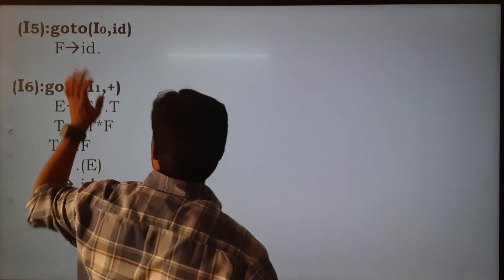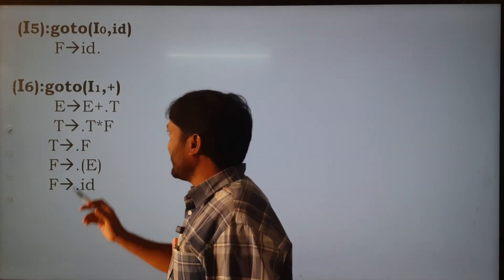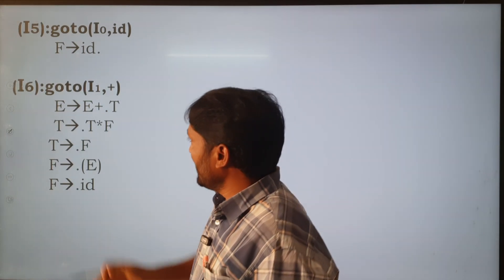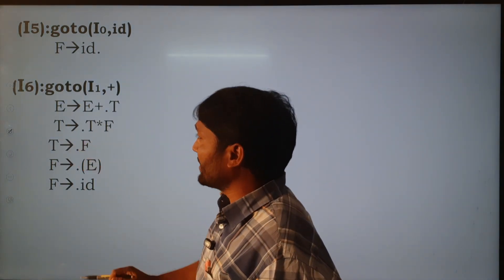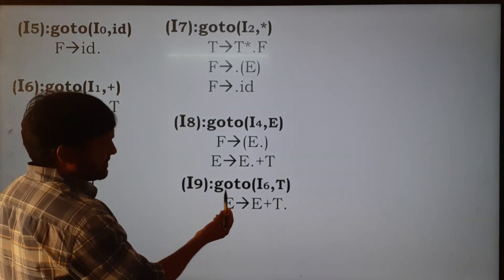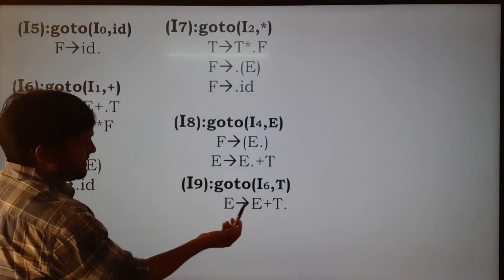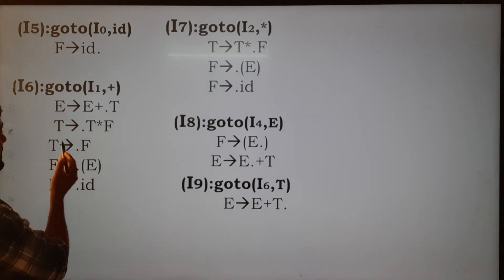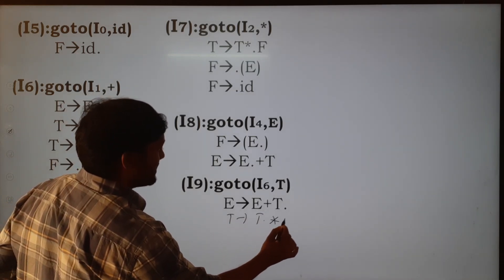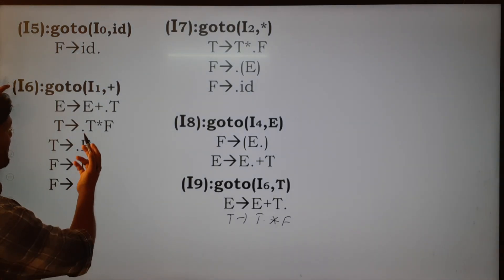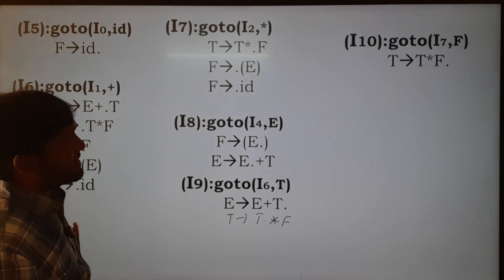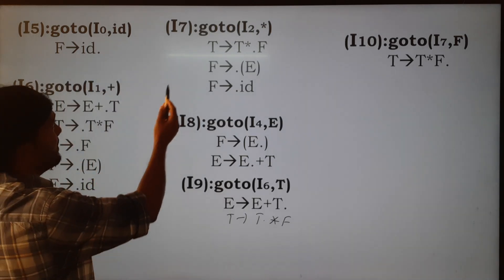In I6 there is capital T after the dot. We apply the goto function for capital T. Applying goto(I6, T): E → E+T. and there is one more production T → T.*F. This is I9. F is already over, open bracket is already over, and id is also over. Next come to I10 — we apply goto(I7, F). It becomes T → T*F. No symbol after the dot for F.